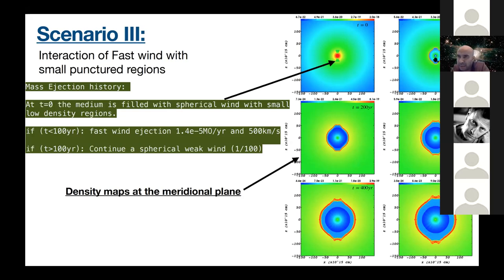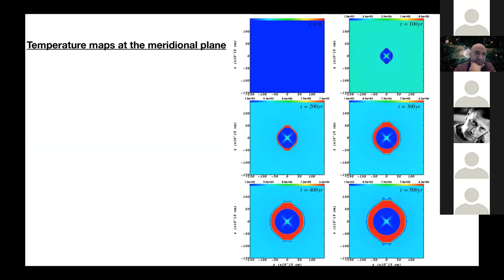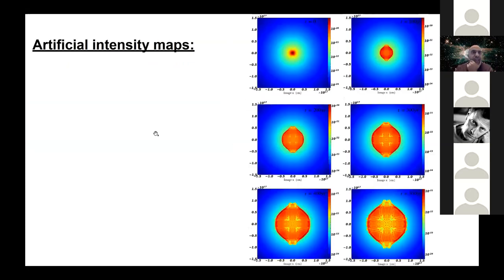So here we start to see the ears. It expands also here till 500 years. I can continue the simulation, but we still get the same thing over time. Here I show the same but with the temperature. So we have a hot bubble here. The inner shock, the outer shock, and the contact continuity. And here I plot the total nebula and see nice scales, the artificial intensity. So we see, we still see ears, but different kinds of ears than before, than previously two models.